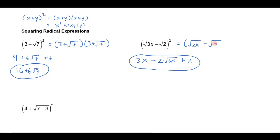To verify: √(3x) times √(3x) is 3x, the outers give −√(6x), the inners give another −√(6x) making −2√(6x), and negative √2 times negative √2 is positive 2. That confirms the result.